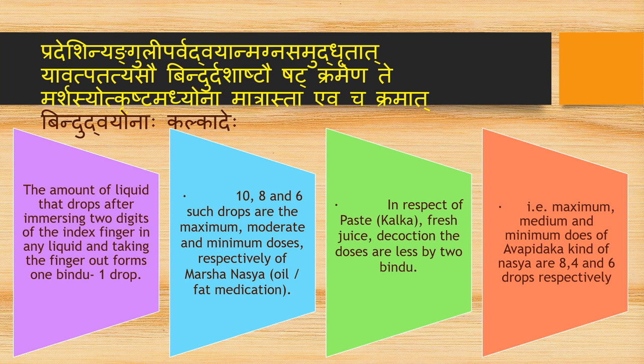Measurement of Marshanasya: one bindu (one drop) is the amount of liquid that drops after immersing two digits of the index finger in a liquid and taking the finger out. For Marshanasya (oil or fat medication), 10, 8, and 6 drops are the maximum, moderate, and minimum doses respectively. For paste (kalka), fresh juice, or decoction (Avapida type), the doses are less by 2 bindus — that is, maximum, medium, and minimum doses are 8, 6, and 4 drops respectively.